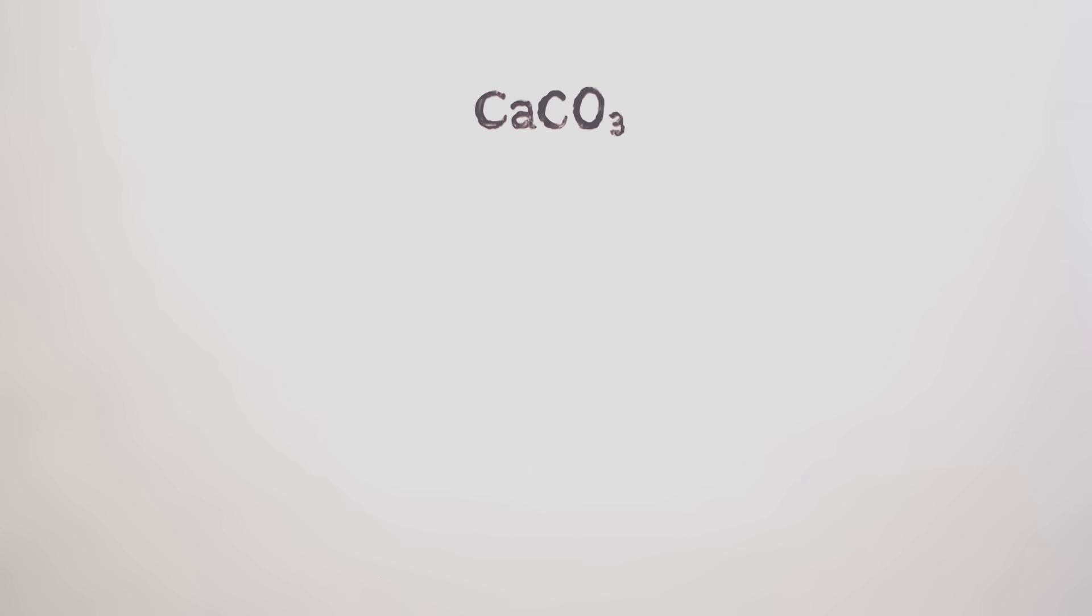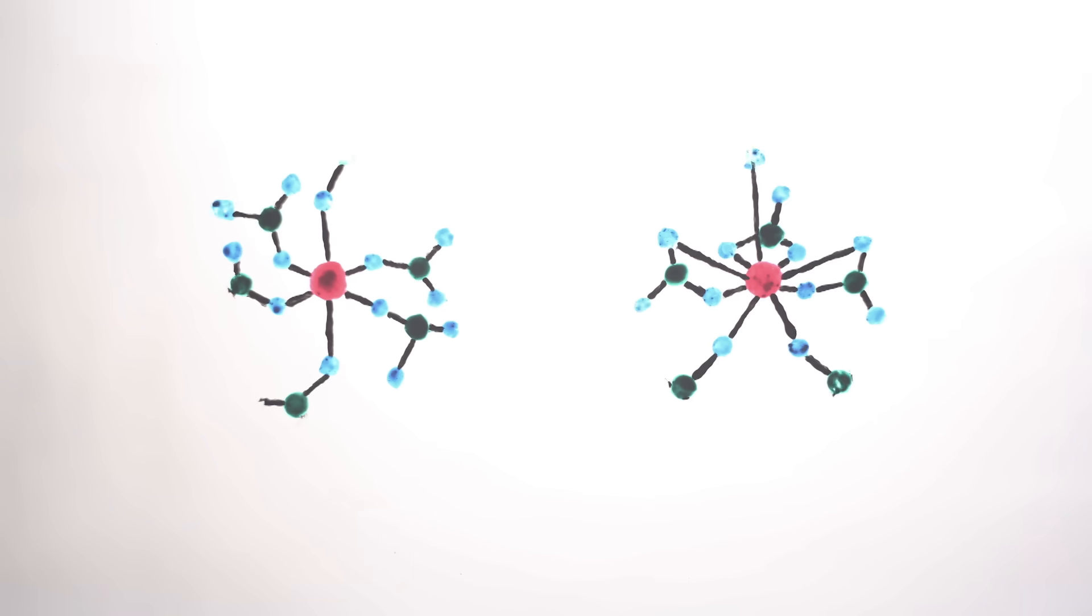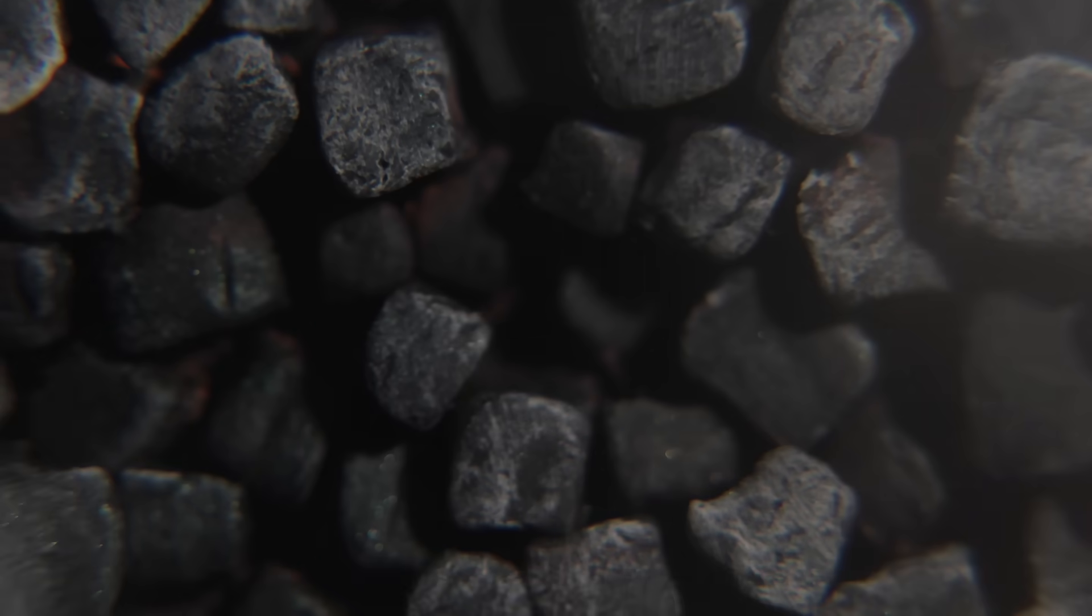Mollusks carefully control all components of their calcium carbonate creations, even manipulating CaCO3 at the molecular level. Using special proteins, mollusks can produce two crystal structures out of CaCO3: calcite and aragonite. Both of these compounds have the same chemical composition, but different qualities due to the way their crystal lattices are arranged.